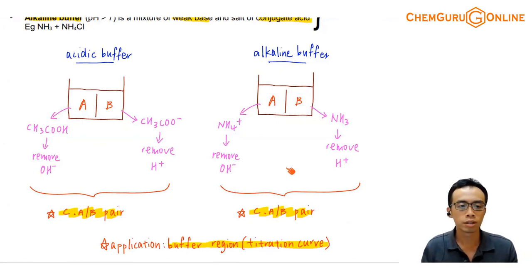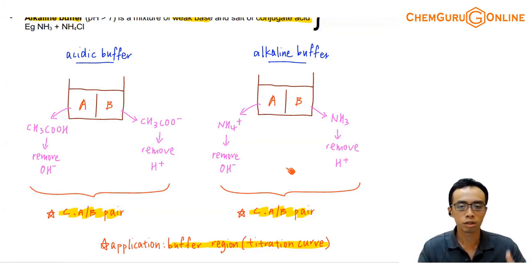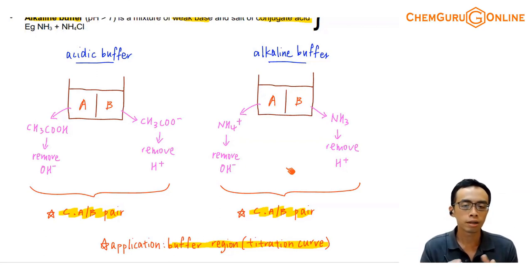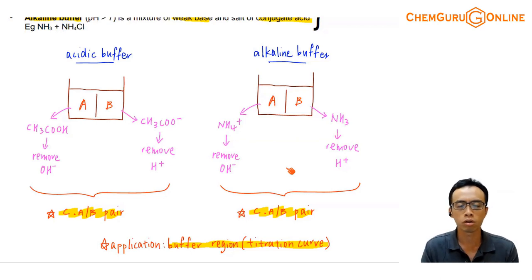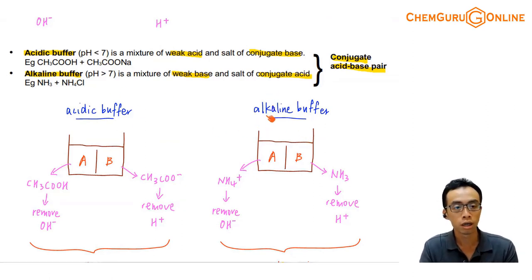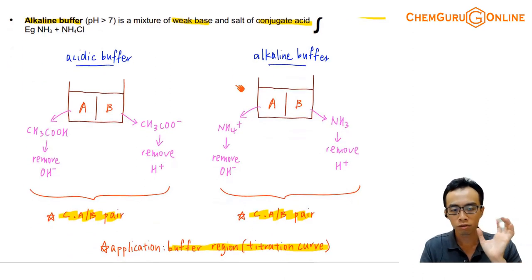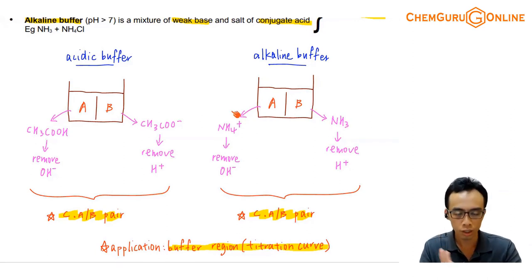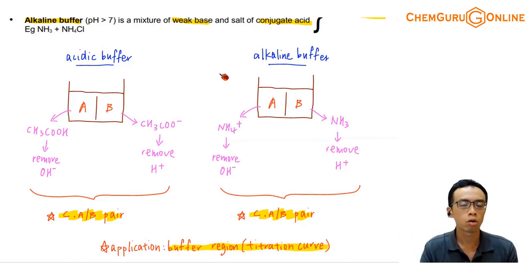I don't really like treating acidic buffer and alkaline buffer as independent concepts, because both are nothing more than a mixture of a conjugate acid-base pair. As long as I have a conjugate acid-base pair, I can consider it a buffer and use the buffer equation to calculate its pH. The real difference — the only difference — between an acidic buffer and an alkaline buffer is the buffering range: an acidic buffer maintains pH in the acidic region (pH less than 7), while an alkaline buffer maintains pH in the alkaline region (pH above 7). In terms of concept, calculation, and formula, they are exactly the same. So don't treat them as separate — lump them together as a conjugate acid-base pair.